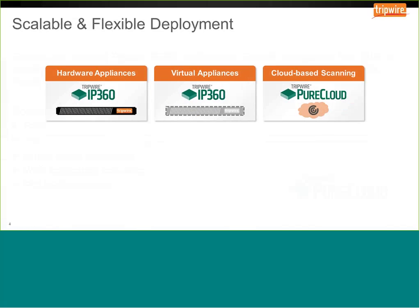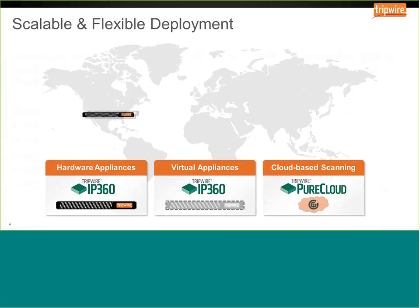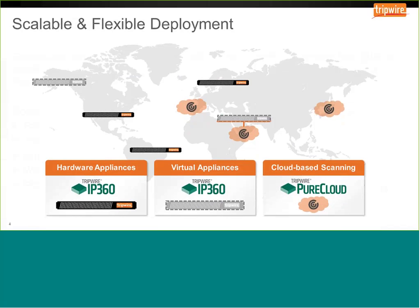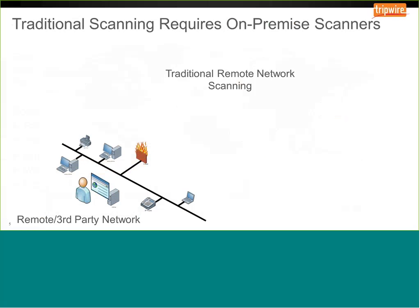Tripwire Pure Cloud is an extension of your IP 360 implementation. In combination with any hardware or virtual appliances you have deployed — whether in a private or public cloud — Pure Cloud is essentially another scanner that works in conjunction with that architecture, expanding your scanning scope and reach globally across your extended networks.